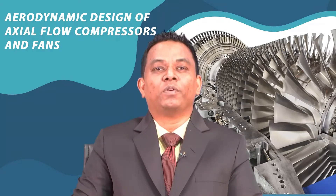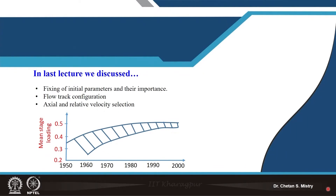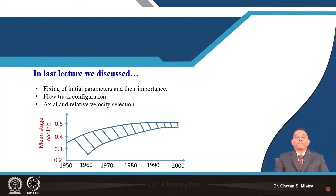Hello and welcome to lecture 36. We are discussing about design strategies. In the last lecture we were discussing about the fixing of initial parameters and their importance. We introduced two parameters: the flow coefficient and loading coefficient. Later on we started discussing about the effect of different parameters on stage efficiency. We combined the parameters called degree of reaction, diffusion factor, loading coefficient, and flow coefficient and their impact on stage efficiency.